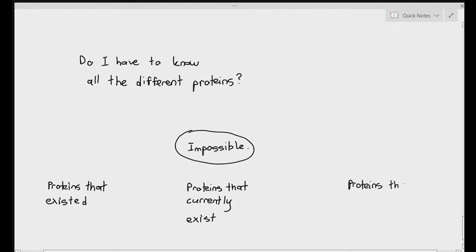Do you actually have to know all the different types of proteins in the world? Obviously not — it is impossible, because there are proteins currently existing that scientists have not fully cataloged. We don't know all proteins in different organisms right now. We cannot know the proteins that existed in creatures that are now extinct. And we don't know of proteins that will exist in the future due to creatures evolving and mutations that have happened. So it's just impossible to catalog all of that.